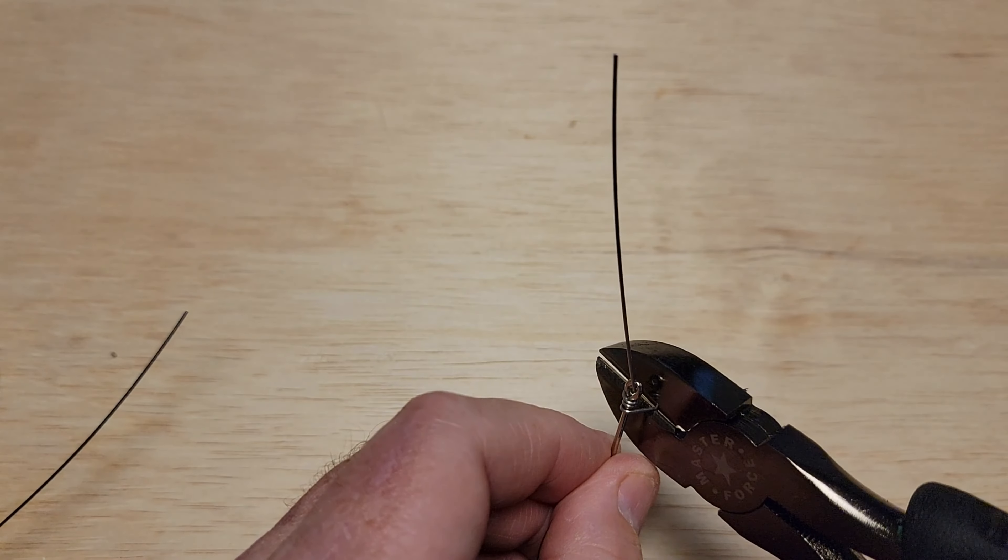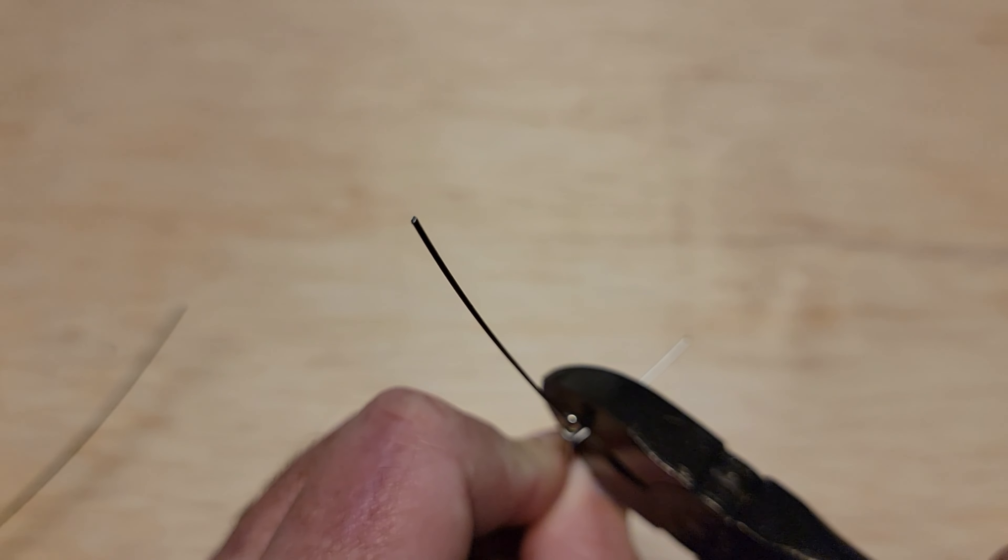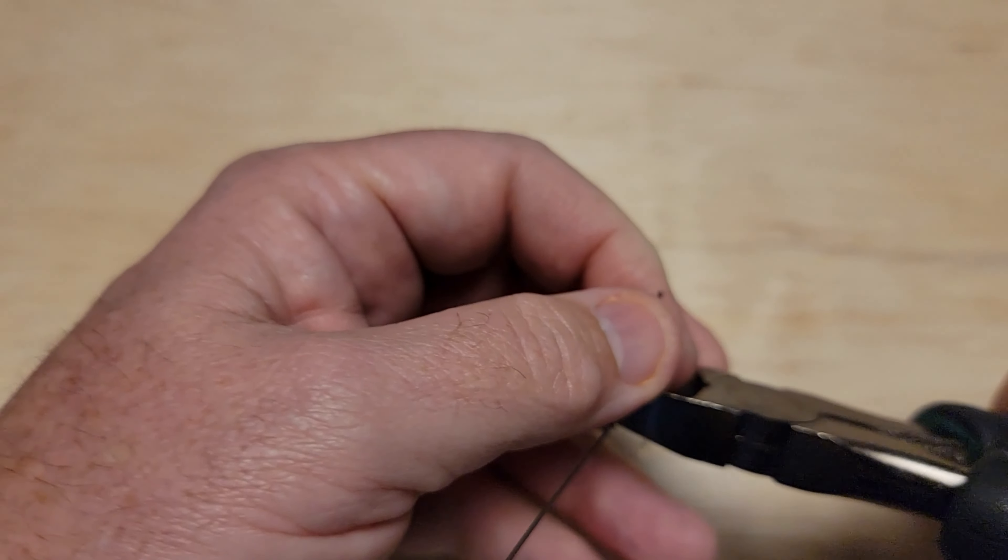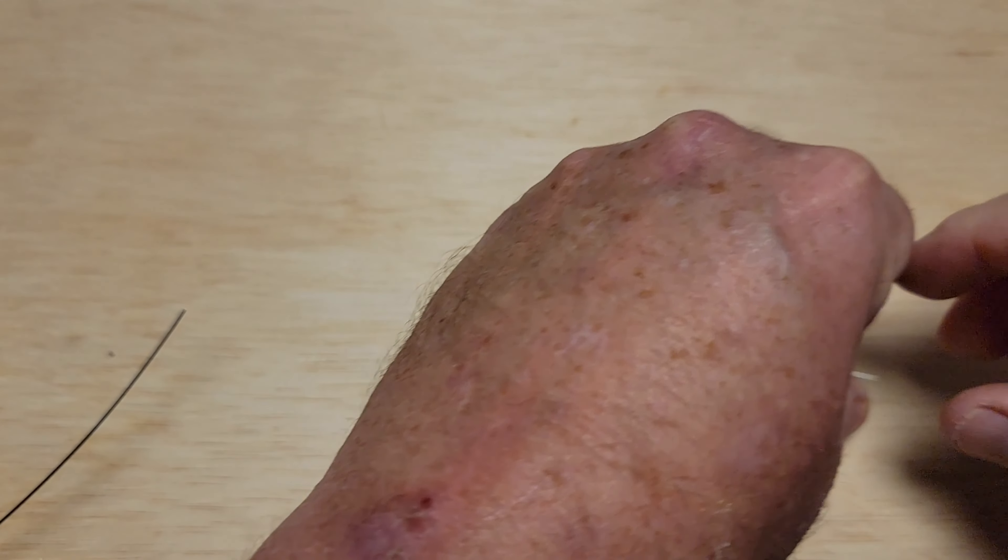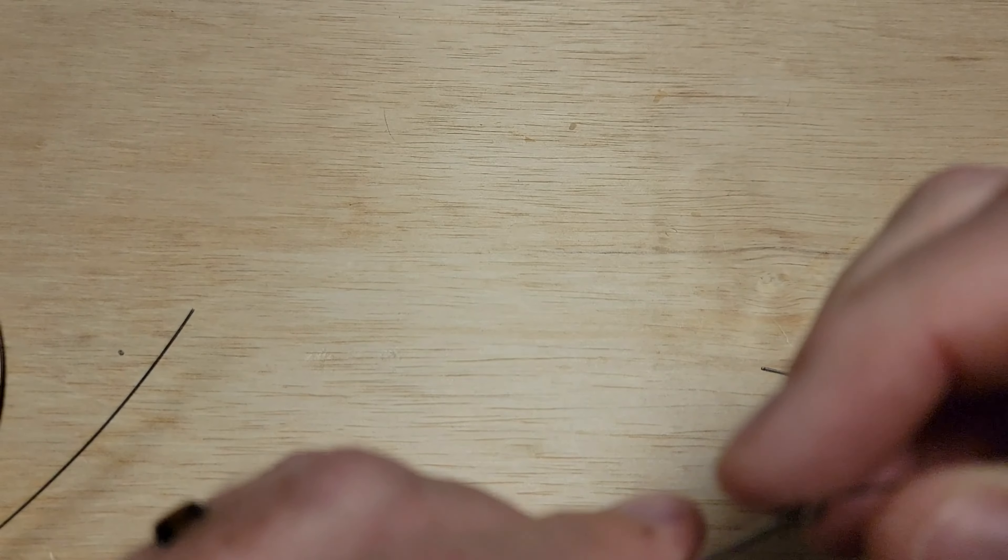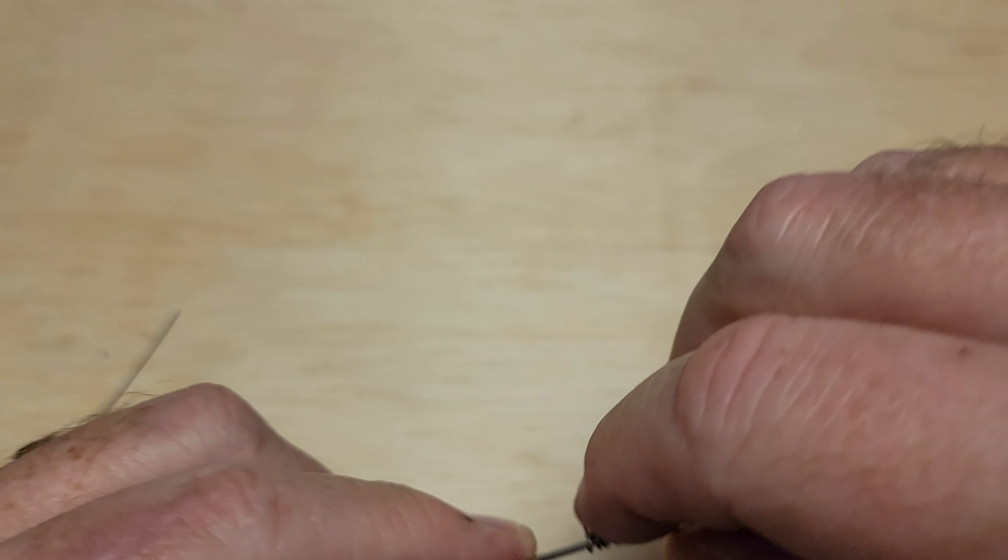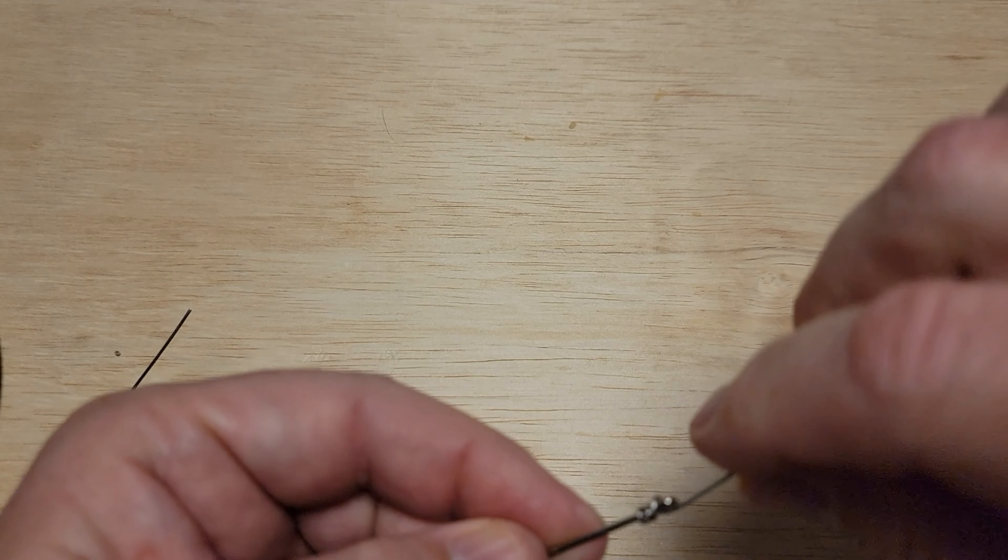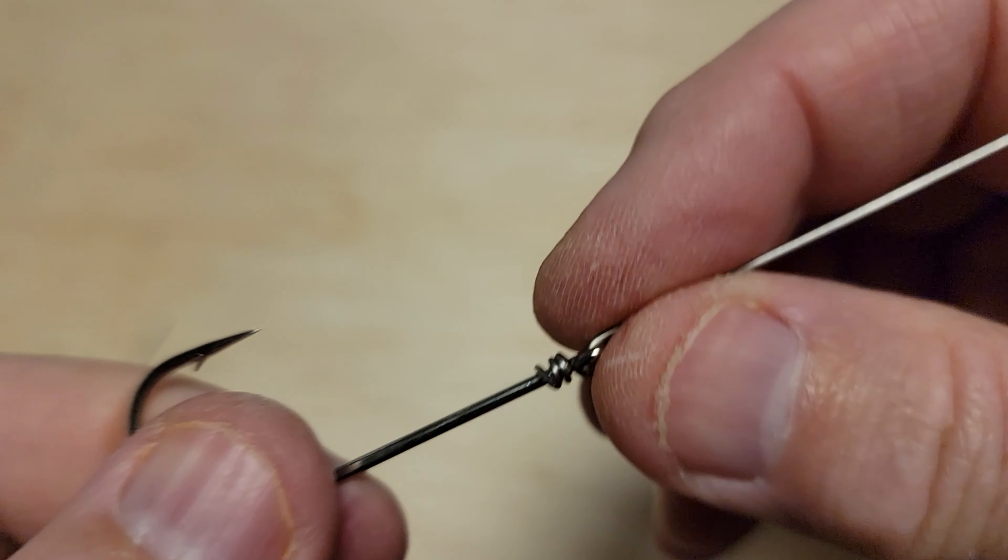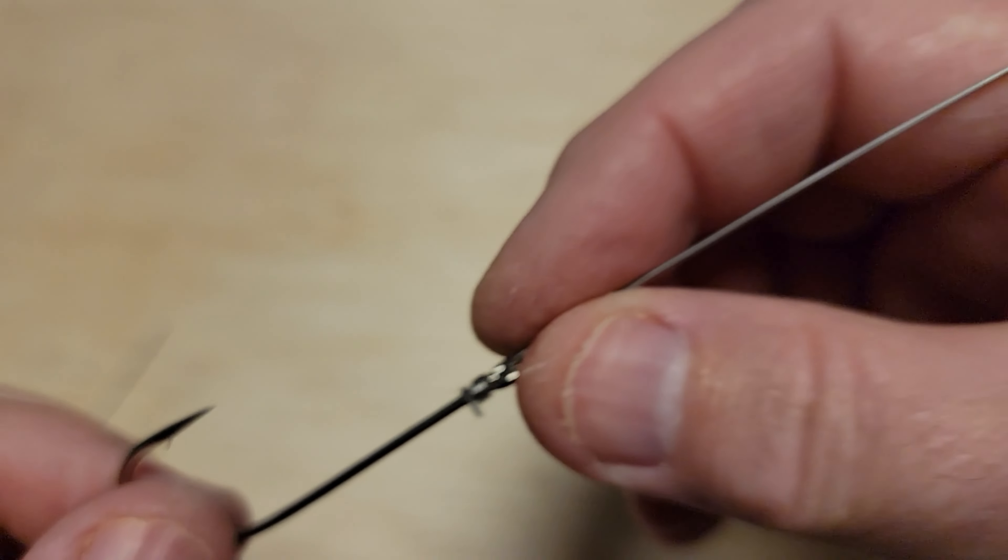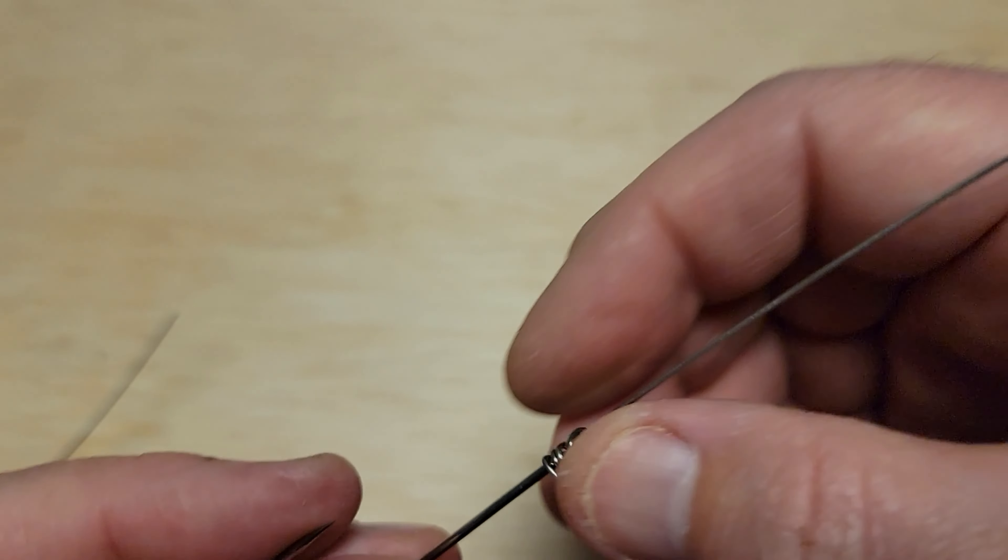One other added bonus - you trim this tag end a little bit longer than you normally would, and I'll do that on this one. That also acts as a keeper for, let's say, a soft plastic you may put on there, a skirt or whatever. That's the third method I use to put a hook on a lure.